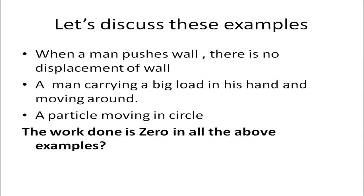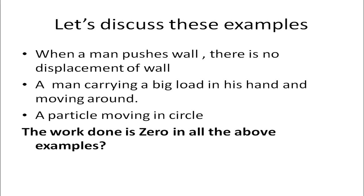Let's discuss about these examples and see what is the work done in these cases. First case, when a man pushes a wall, there is no displacement of the wall. We say that the work done is zero because there is no displacement. In the second example, a man carrying a big load in his hand and moving around — the work done is zero in this case as well. Similar is the case for a particle moving in a circle. So the work done is zero in all the above examples.